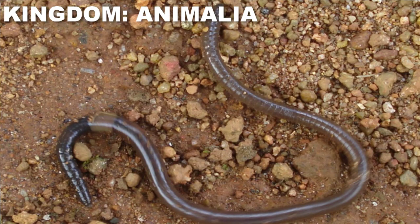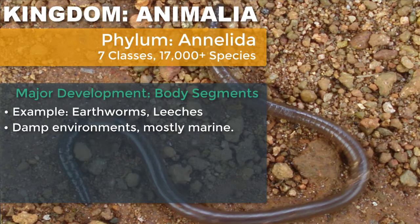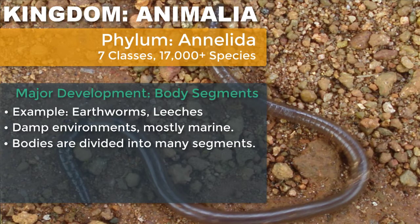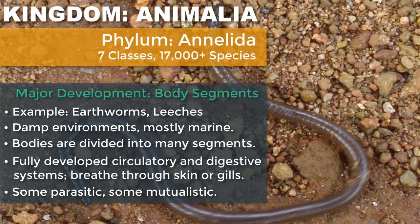We're now going to look at our third grouping of worms. We looked at the Platyhelminthes — the flatworms — and the nematodes — the roundworms — and now we're going to look at the annelids, the segmented worms. In terms of identifying them, you can see clear body segmentation — different portions of the body. That's why we look at these as a little bit more complex, because they do have different segments. Even though we most associate annelids with groundworms or earthworms, most of the organisms in this phylum are actually marine.